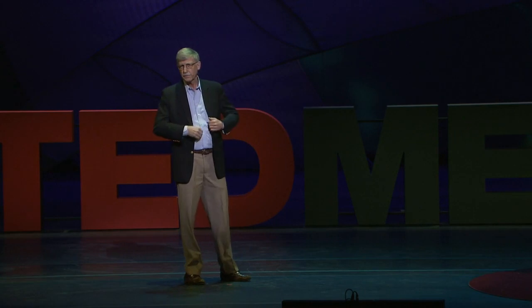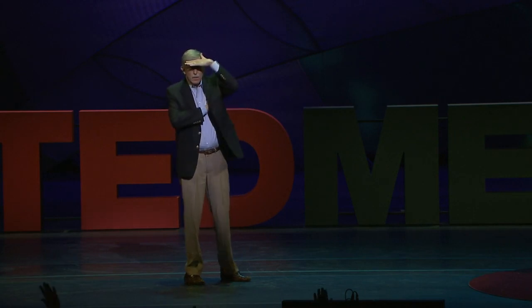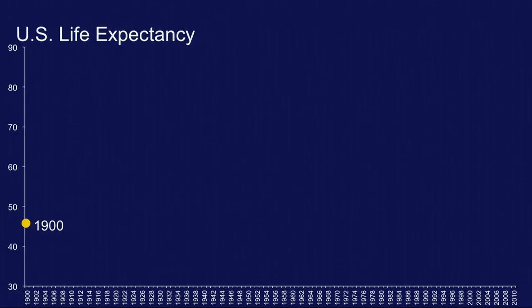Let me ask for a show of hands — how many people here are over the age of 48? Well, there do seem to be a few. Congratulations, because if you look at this particular slide of U.S. life expectancy, you are now in excess of the average lifespan of somebody who was born in 1900.